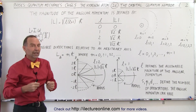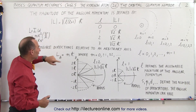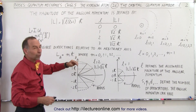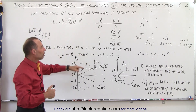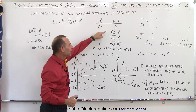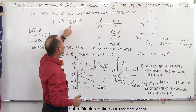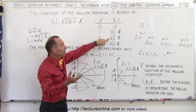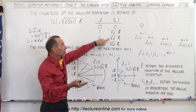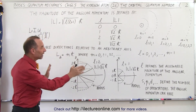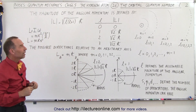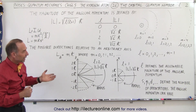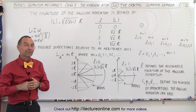This is how the directions are calculated — by asking what integer values will fit inside the value defined by the magnitude equation. For the square root of 6, those are negative 2, negative 1, 0, 1, and 2. That is the physical meaning of the orbital quantum number and how we define it.